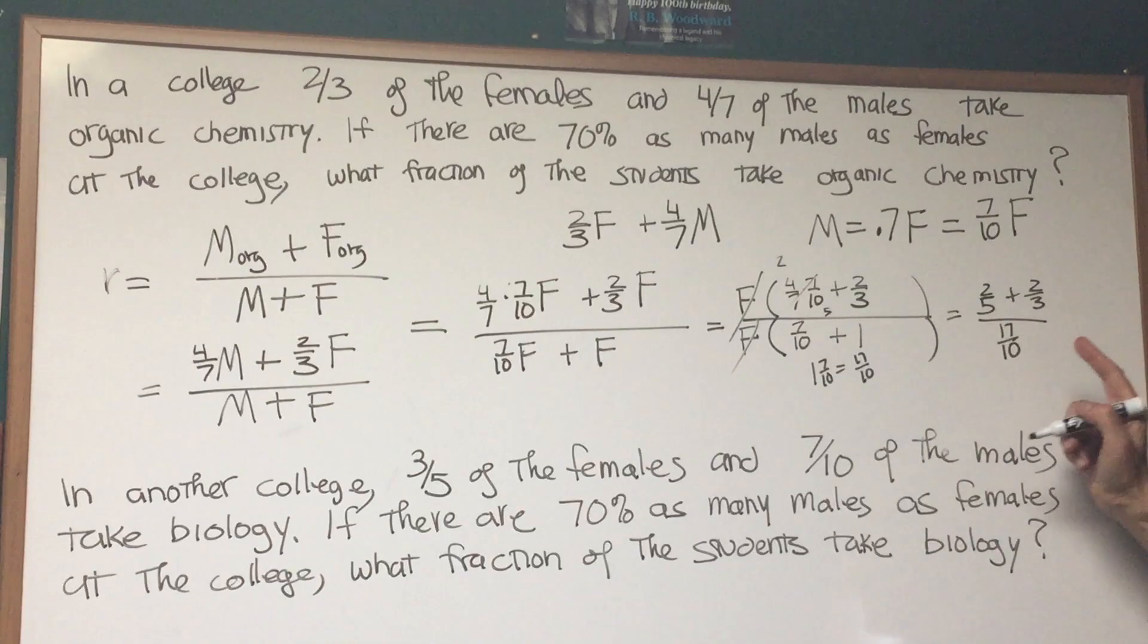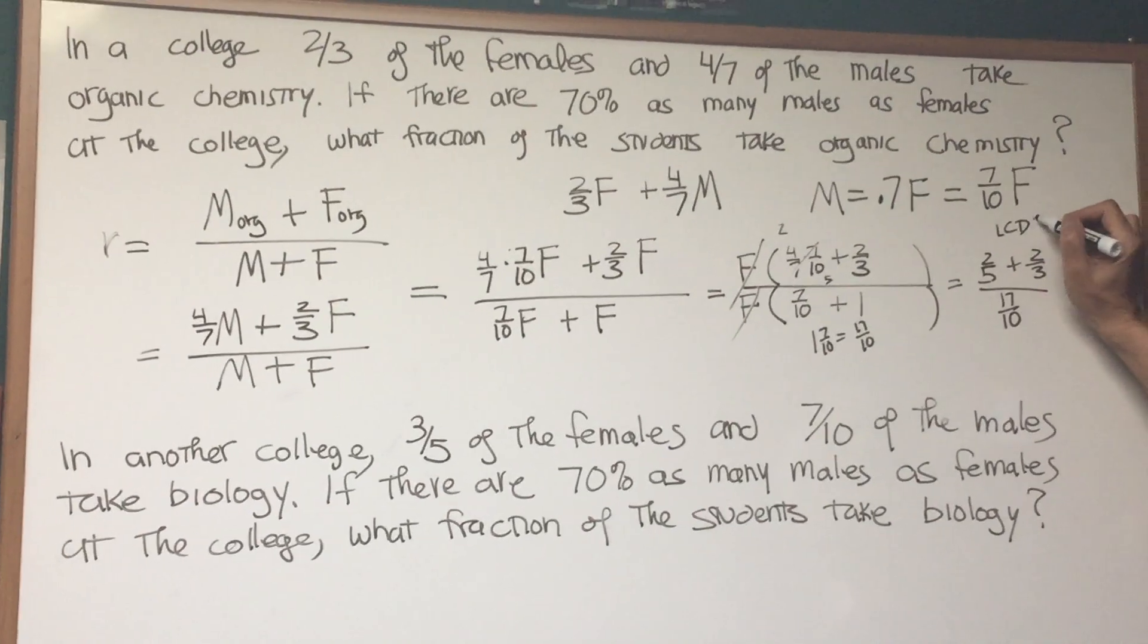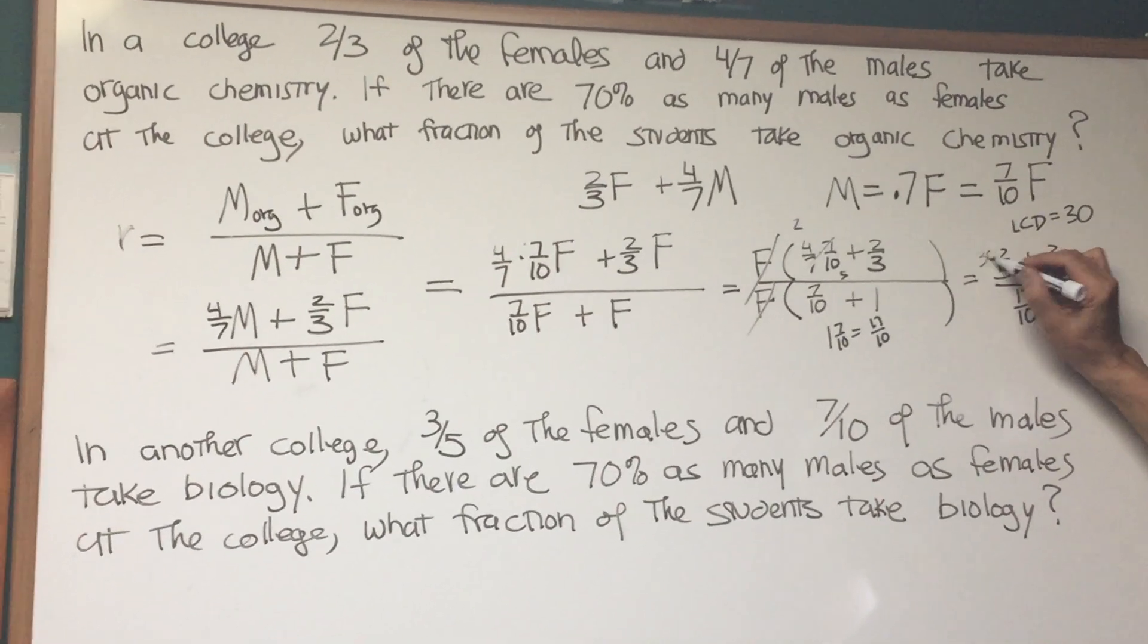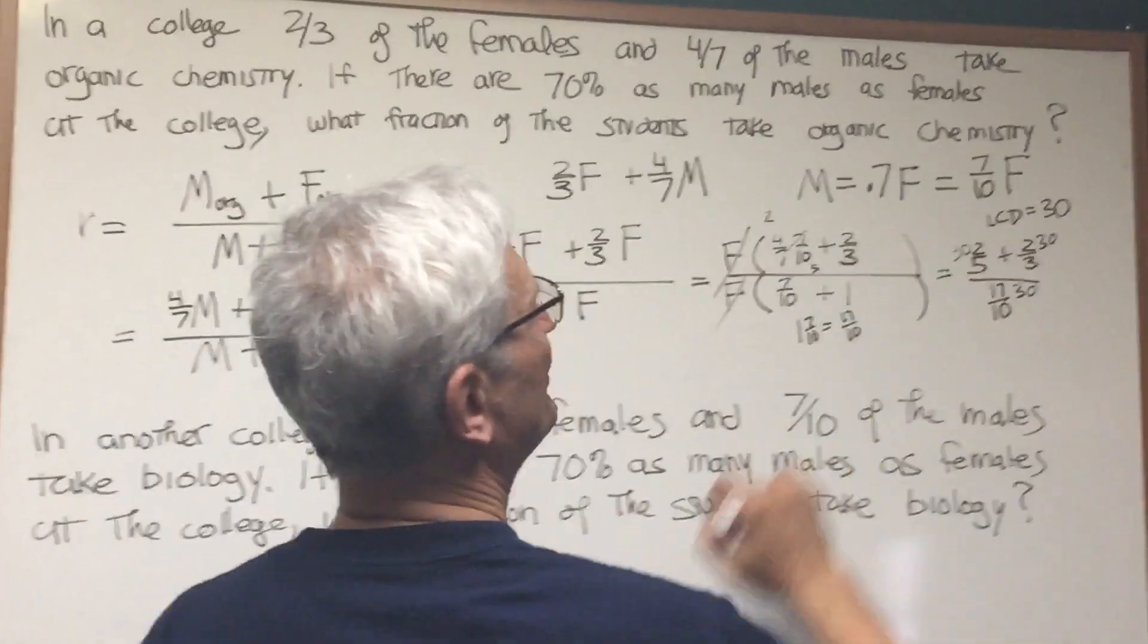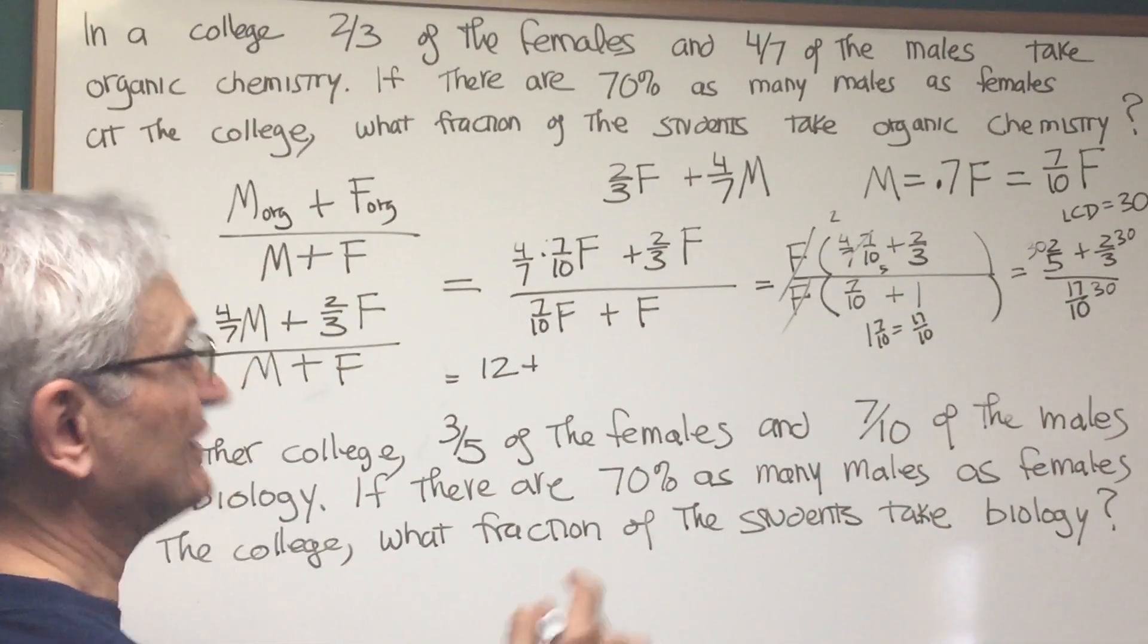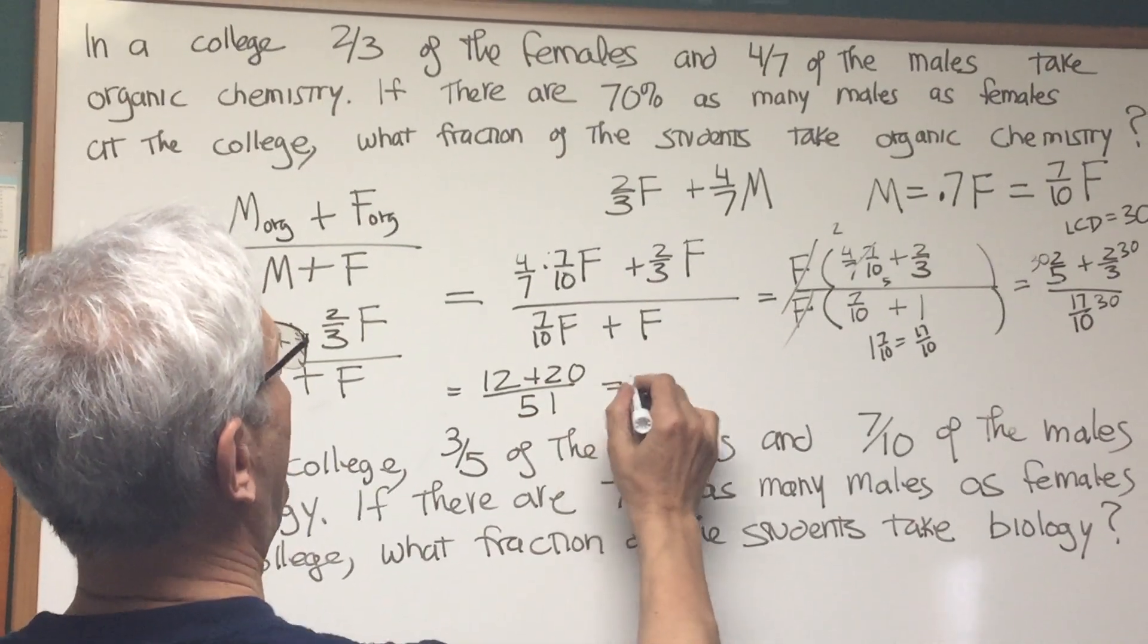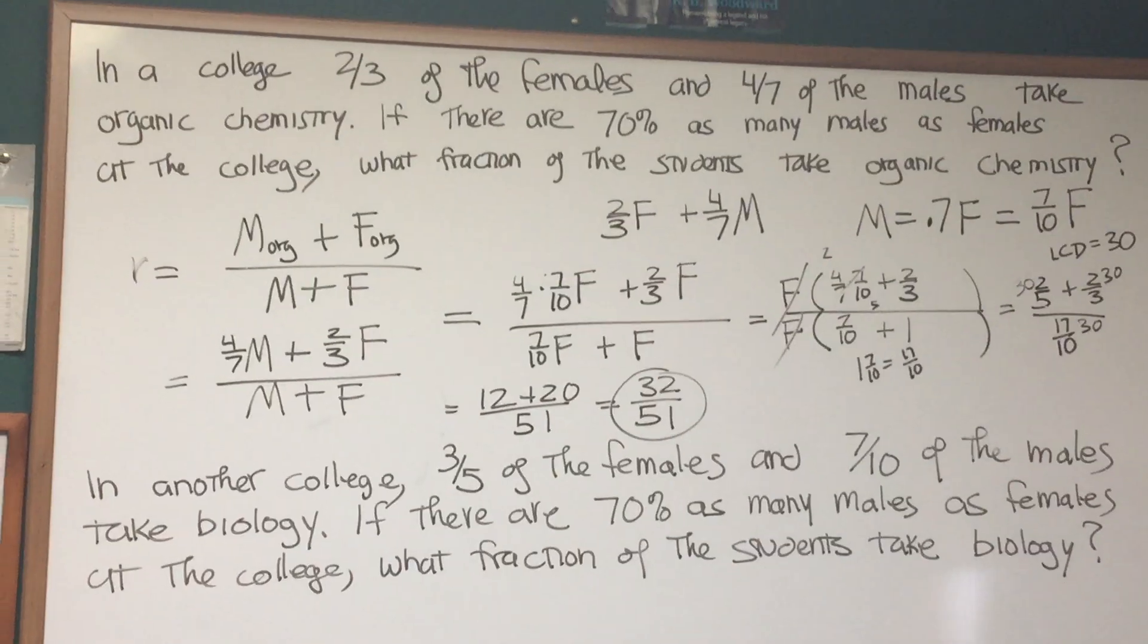All we have to do is simplify this expression, and we have the answer. How do we simplify a complex fraction? We take a look at all the internal fractions. We find the LCD between five, three, and ten. What's that going to be? Thirty. So let's multiply every term in the numerator by thirty, and every term in the denominator by thirty. Five into thirty goes six. Six times two is twelve. Three into thirty goes ten. Ten times two is twenty. And in the denominator, ten into thirty goes three times. Three times seventeen is fifty-one. And our answer is thirty-two over fifty-one. There's the fraction we're looking for.